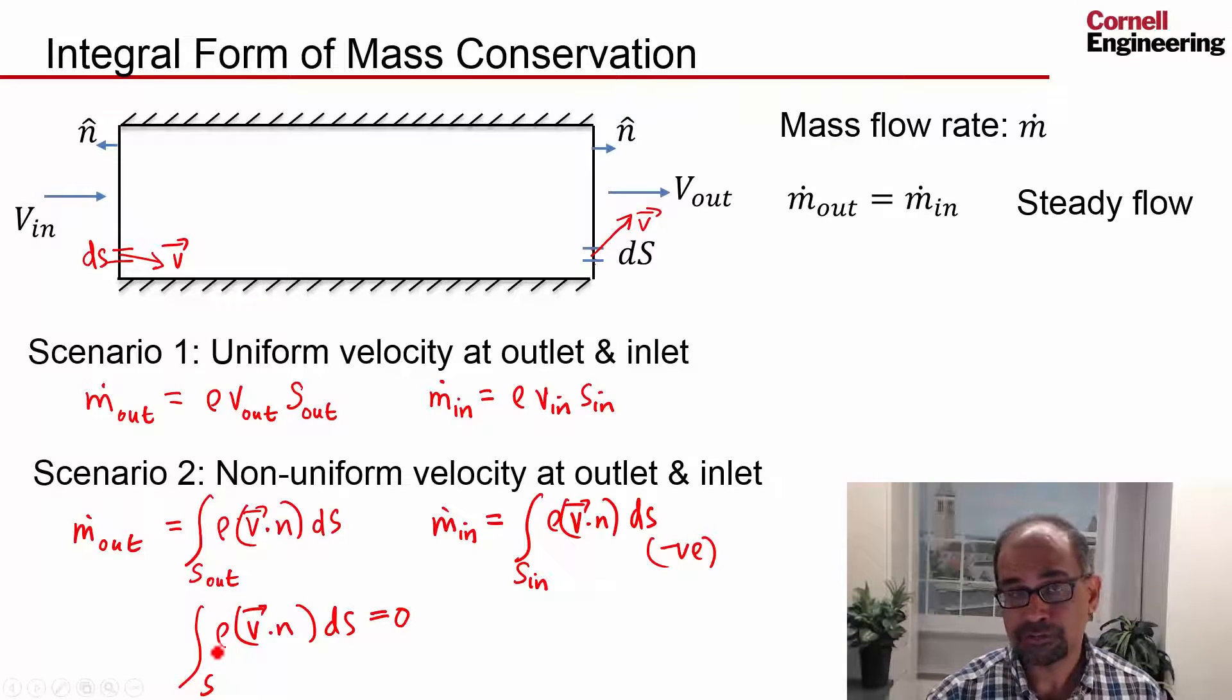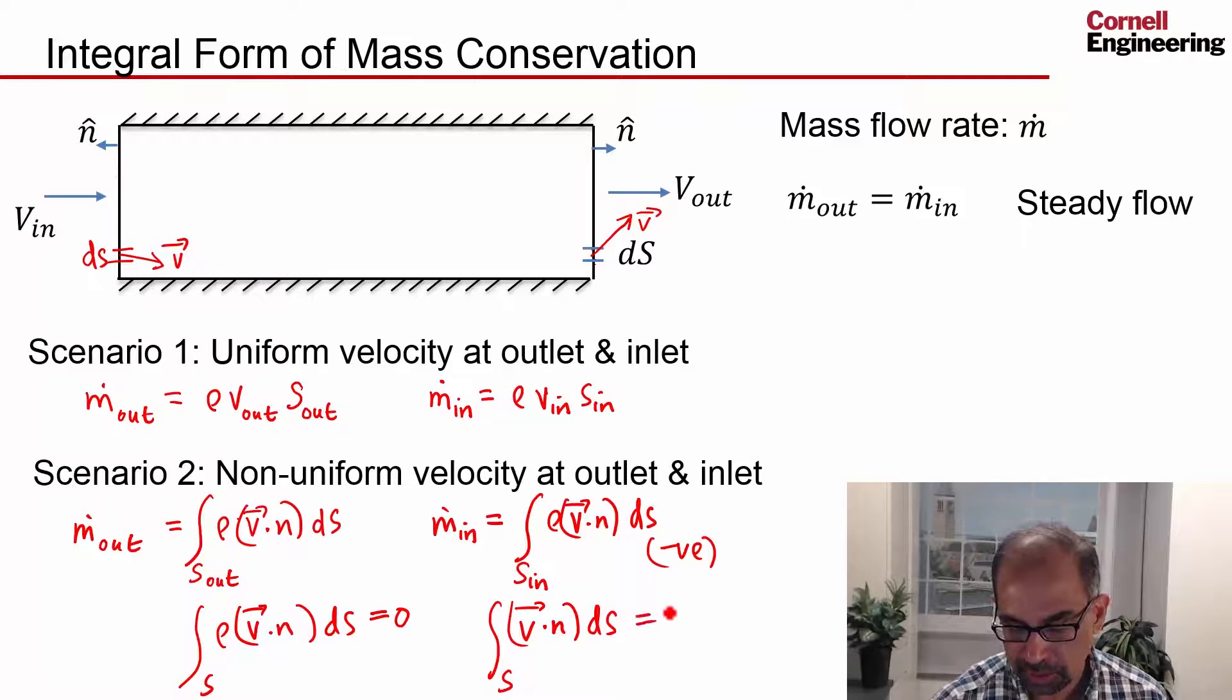And if we are assuming incompressible flow, so density can be brought out of the integral, and you can take that out. So for incompressible flow, you don't even need to consider the density, and you'll get v dot n ds for any surface is equal to zero.